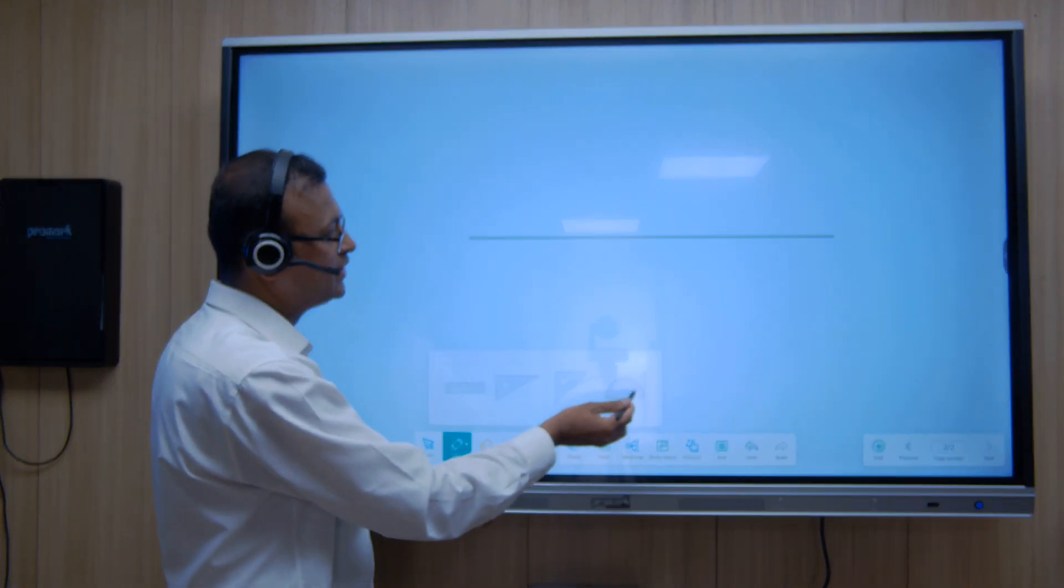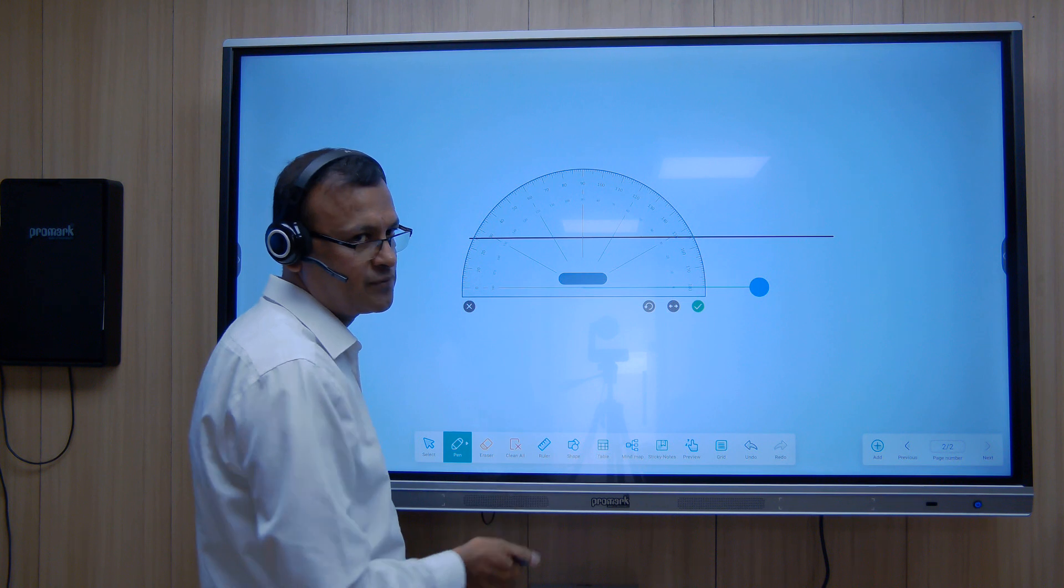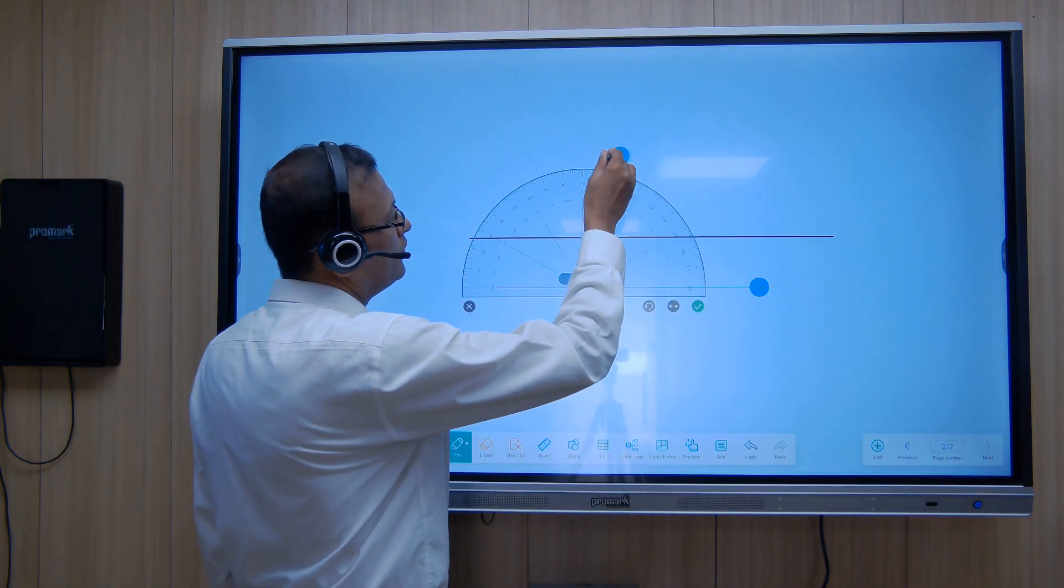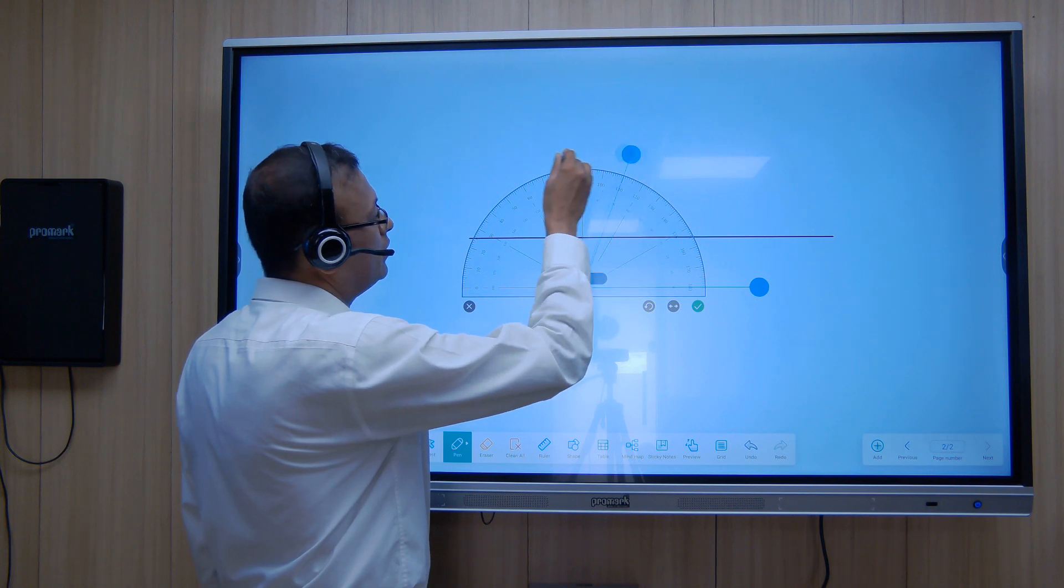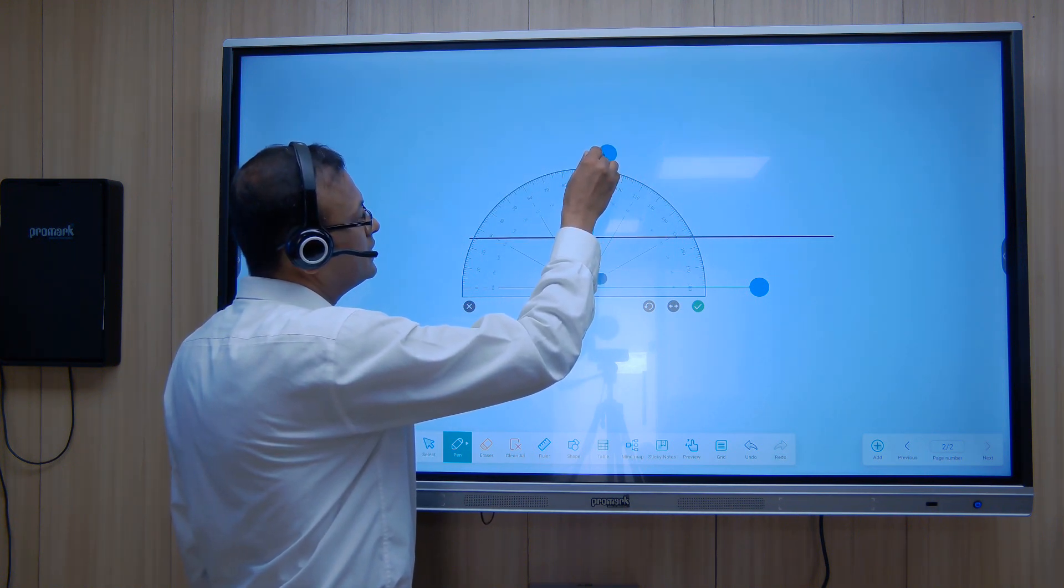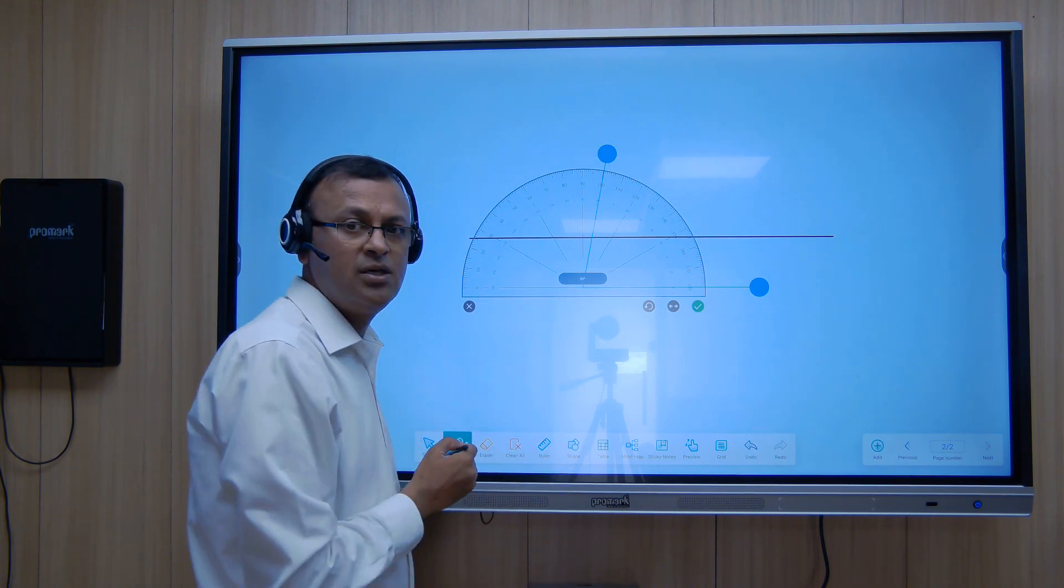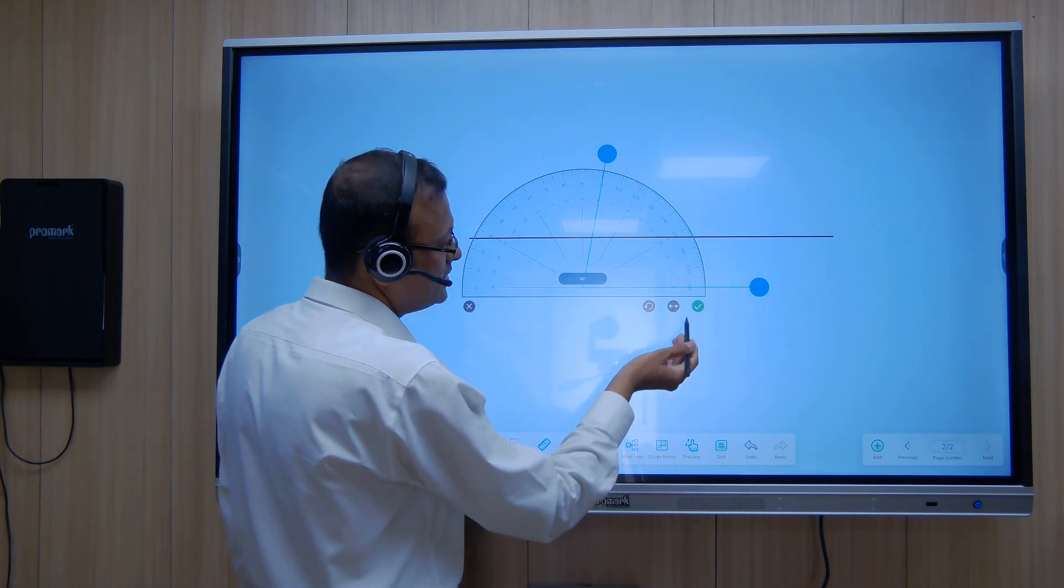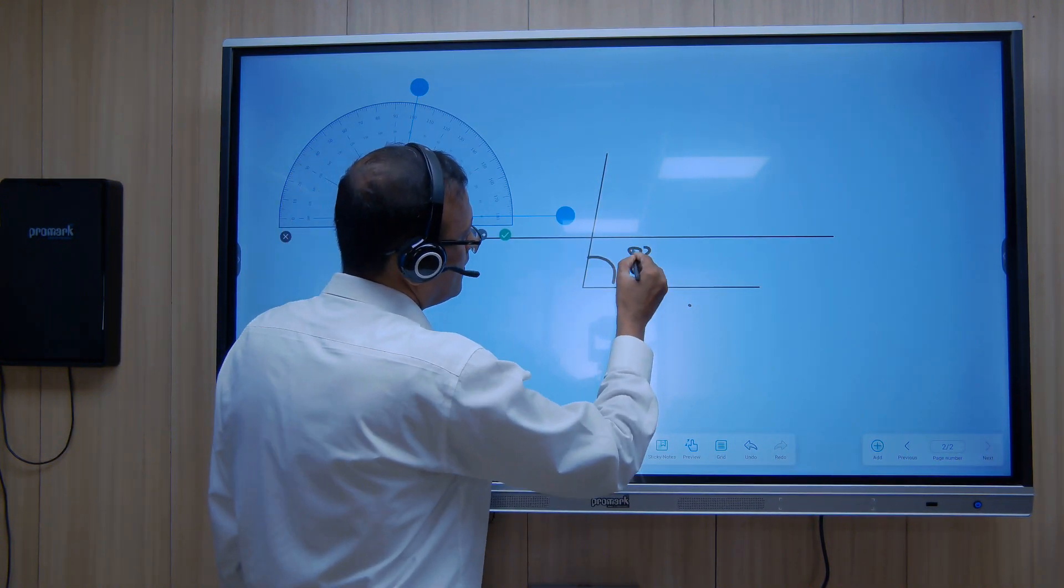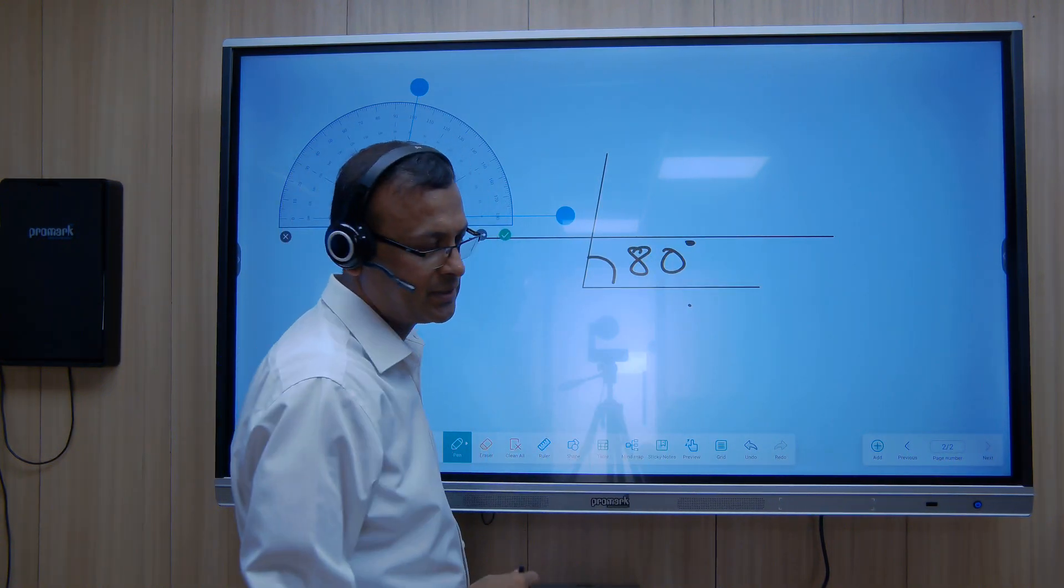And also now we have the protractor. This we can use for our geometry purposes. We can choose the degrees we want: if you want a right angle, an acute angle, or obtuse angle. All we need to do is select it and it tells us exactly what degrees it is. It is 80 degrees.